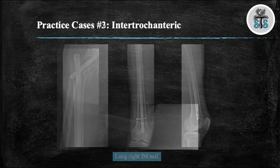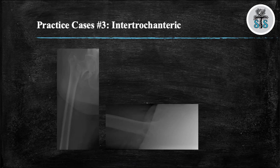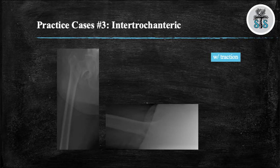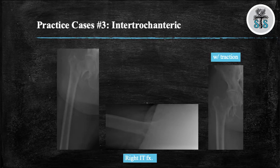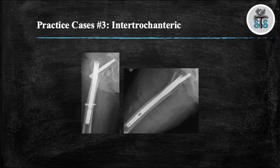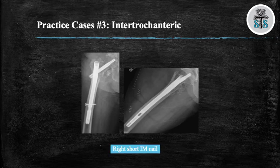Case 3: We have two views, AP and cross-table lateral of a right hip in a skeletally mature individual, demonstrating a right intertrochanteric hip fracture. A traction view is performed as it can be tough from the injury films to determine whether this fracture is stable or unstable. Looking at the traction view, this fracture appears to be stable, therefore it was treated with a short cephalomedullary nail.